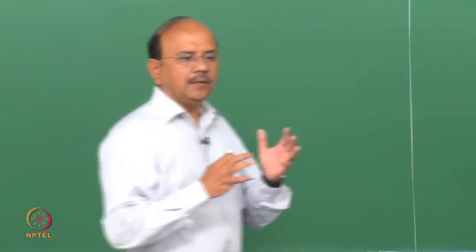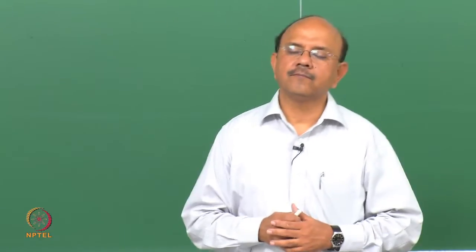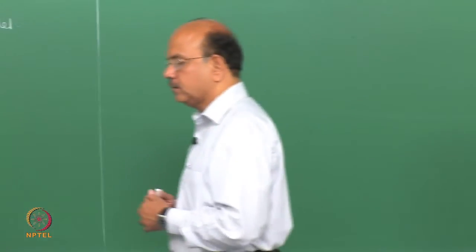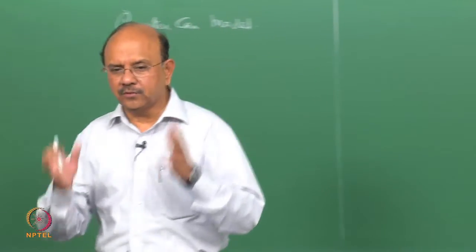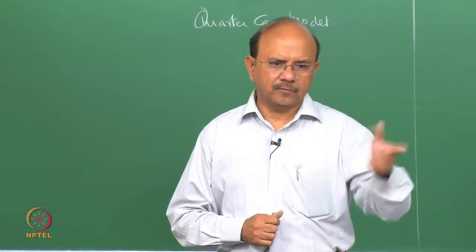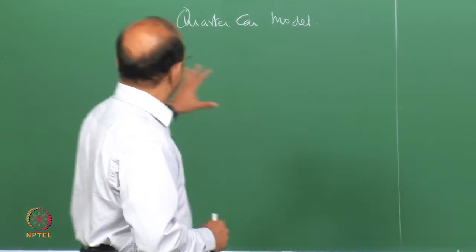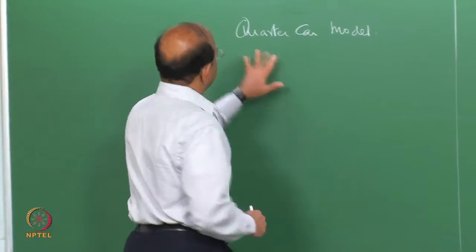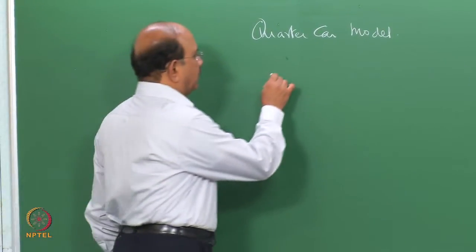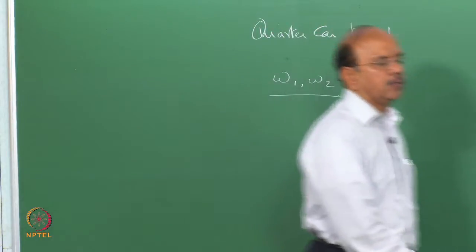We can look at this from a traditional vibration controls perspective. We can write down the characteristic equation and express the whole thing in state space — maybe we will do that in one of the later classes. Once we did the quarter curve model, we found two natural frequencies omega 1 and omega 2.